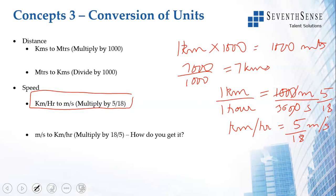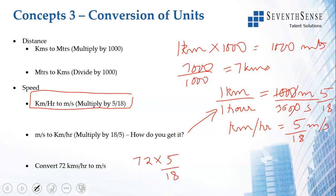Meters per second to kilometers per hour: multiply by 18/5. Remember — km/h to m/s, multiply by 5/18; m/s to km/h, multiply by 18/5. Example: convert 72 km/h into m/s. Multiply by 5/18. 72 ÷ 18 = 4; 4 × 5 = 20. So 72 km/h = 20 meters per second. It also helps to remember multiples of 18: 18, 36, 54, 72, 90, 108, 126, 144, 162, 180.